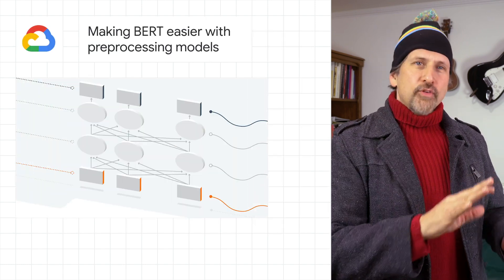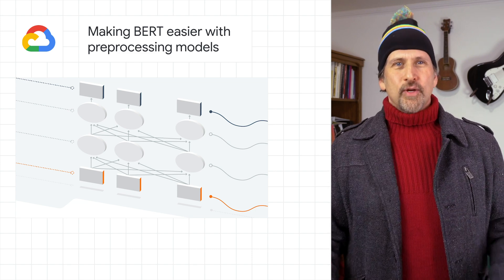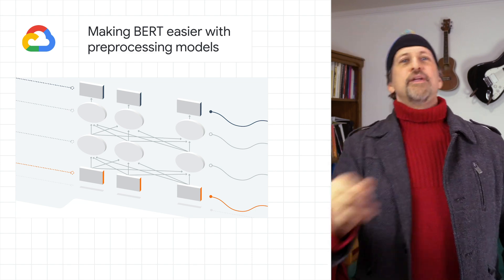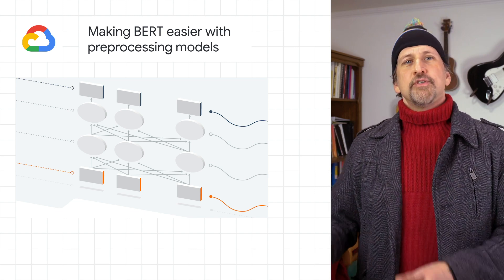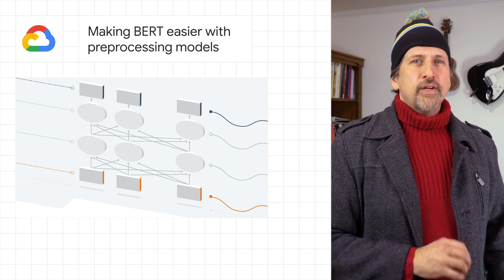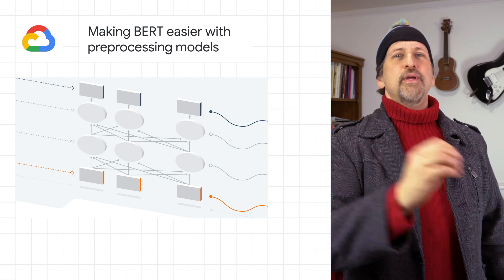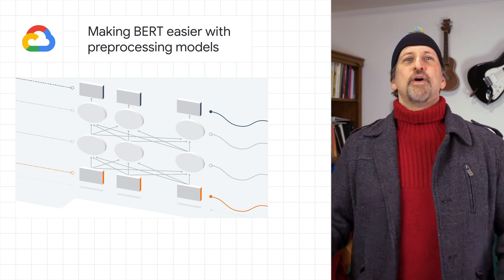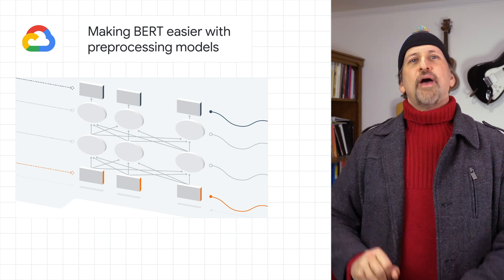We announced a more streamlined approach to using BERT built entirely in TensorFlow. This solution makes both pre-trained encoders and the matching text preprocessing models available on TensorFlow Hub. BERT and other transformer encoder architectures have been very successful in natural language processing for computing vector space representations of text, and BERT and TensorFlow can now be run on text inputs with just a few lines of code.